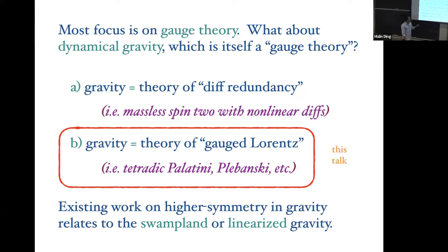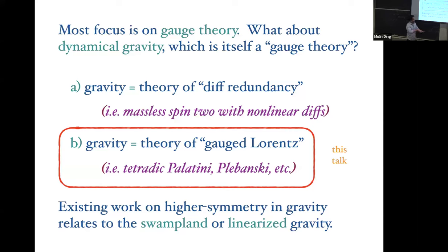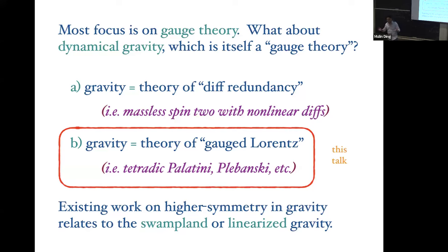Much of the existing gravity work has been about the swampland. The approach is to take a good old gauge theory, ask what generalized symmetries it has, couple that theory to gravity, and ask about the fate of those symmetries. The swampland statement is that global symmetries don't exist, placing constraints on the QFT once coupled to gravity. That's not what I'll be doing — I'm not talking about QFTs with gravity, I'm talking about gravity itself.